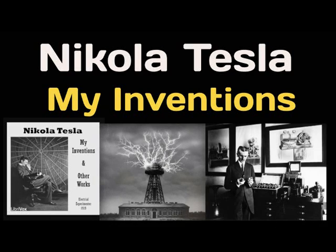Section 13 of My Inventions and Other Works of Nikola Tesla. Electrical Experimenter, February to October 1919. This is a LibriVox recording. All LibriVox recordings are in the public domain. For more information or to volunteer, please visit LibriVox.org. Recording by Lawrence Trask, Mount Vernon, Ohio. InterfaceAudio.com. The Moon's Rotation, Part 2, by Nikola Tesla. This article was published in Electrical Experimenter, June 1919.